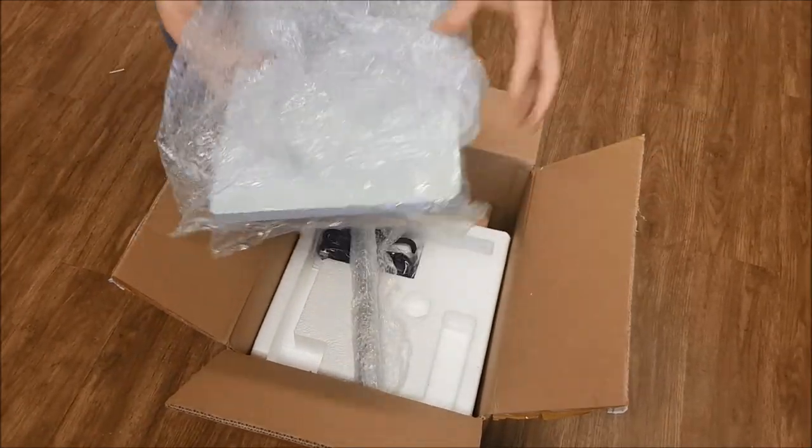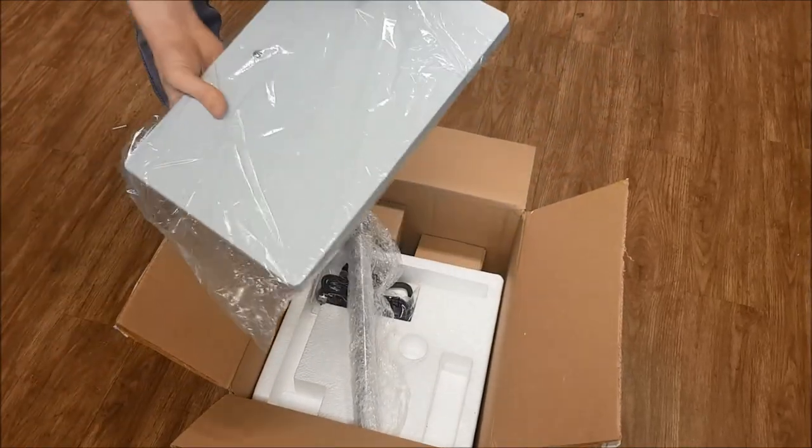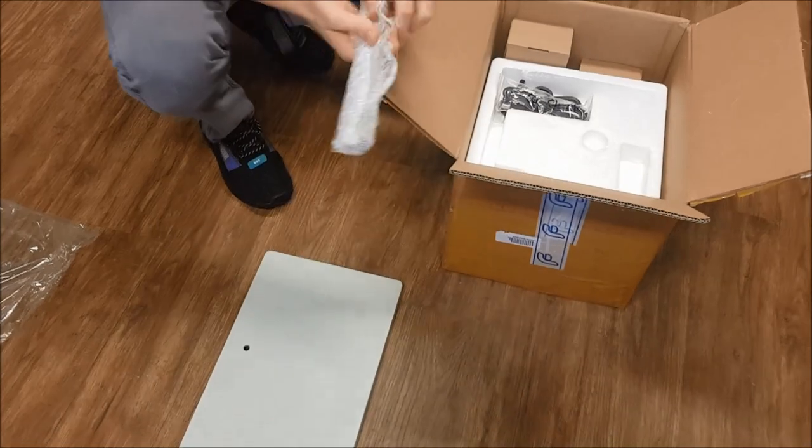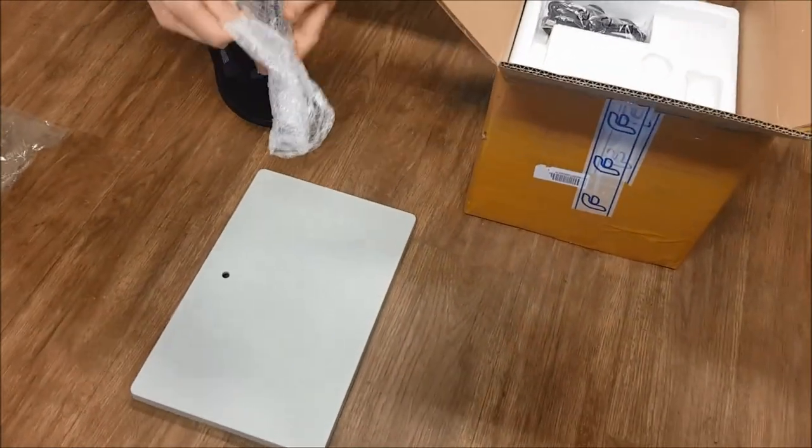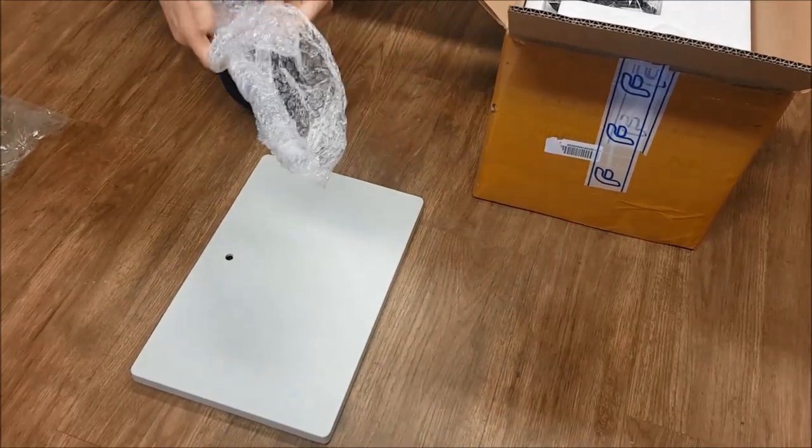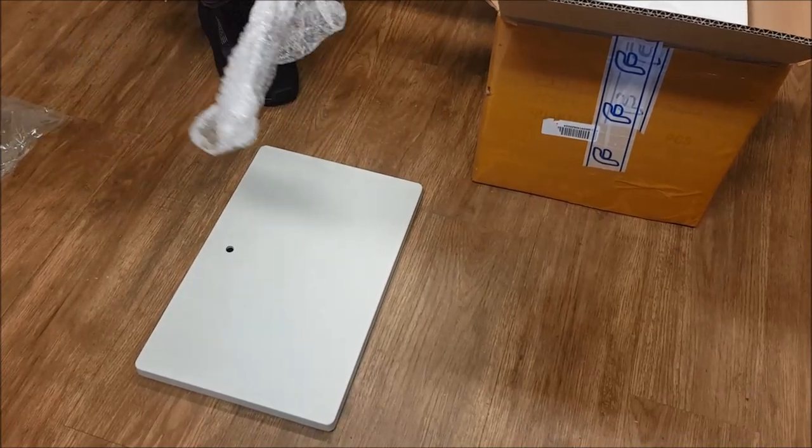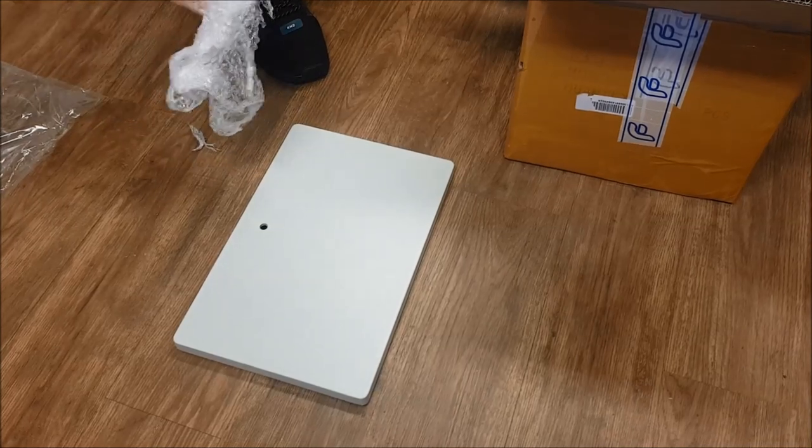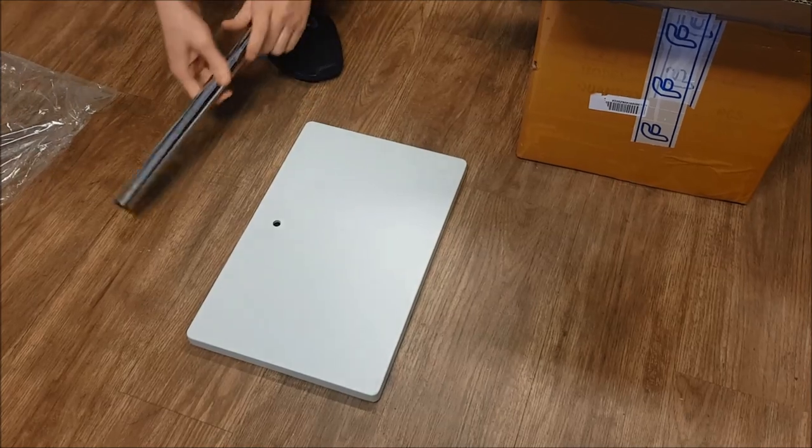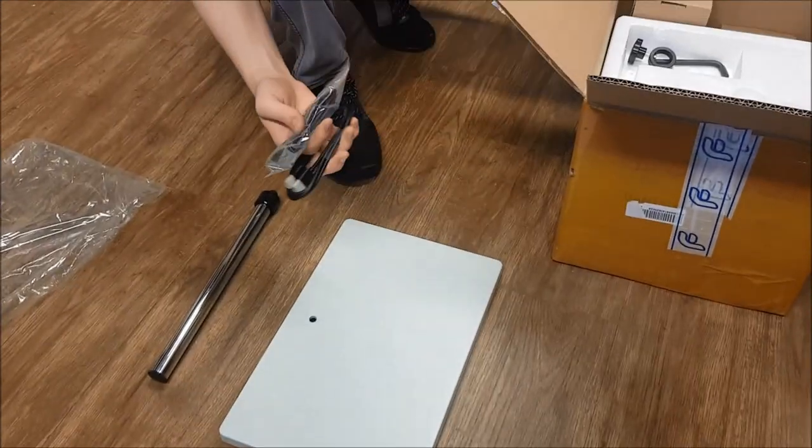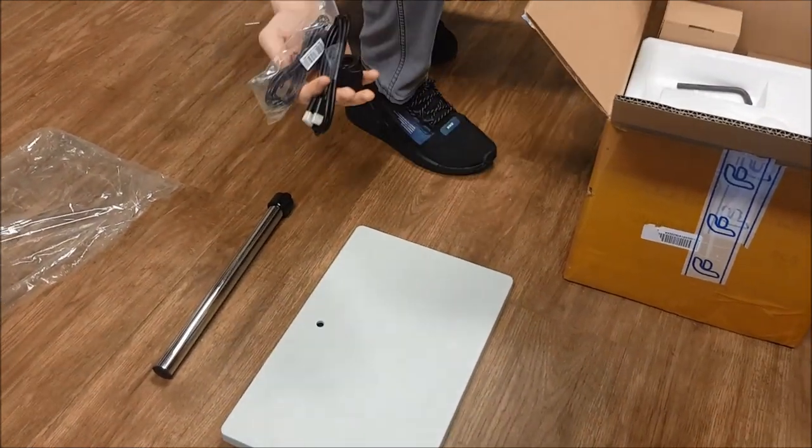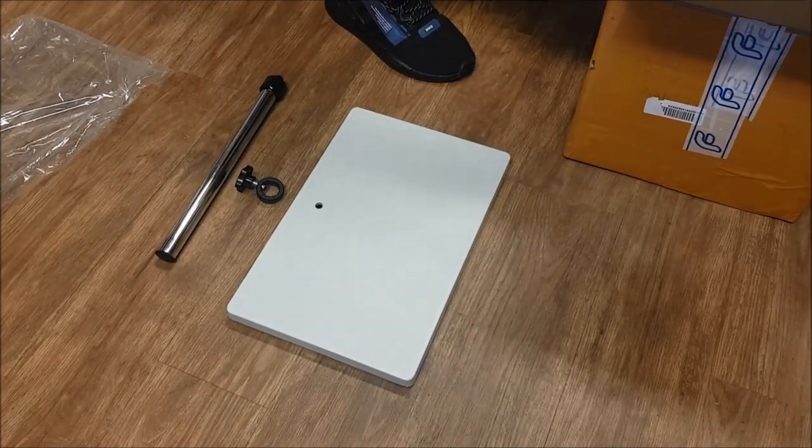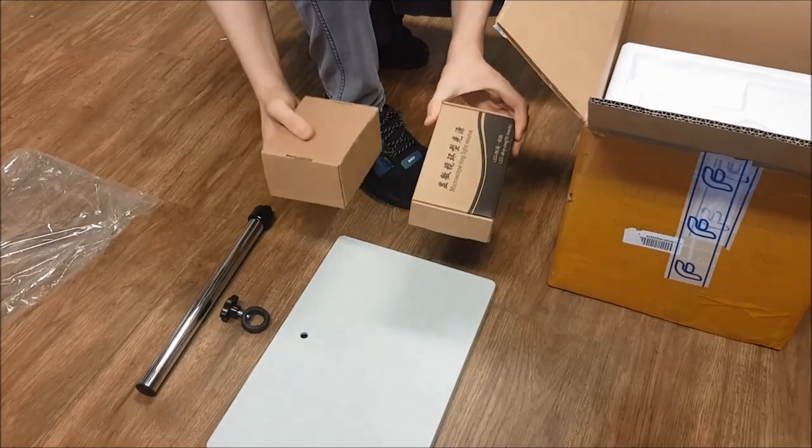First of all you've got your base and the pole that the microscope attaches to. There are some wires, these will be used for the camera which will attach to any sort of external display. We've got both boxes for the ring light as well as the camera, we'll get to those later.